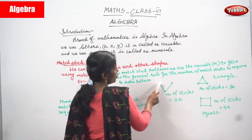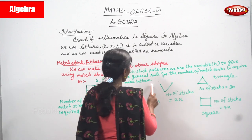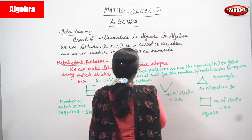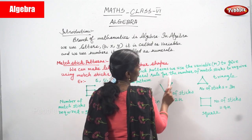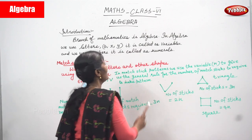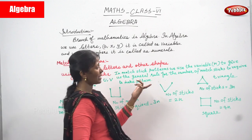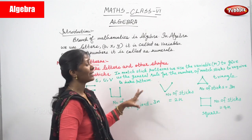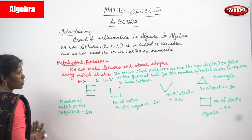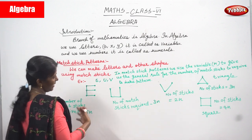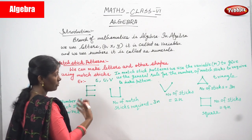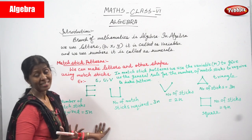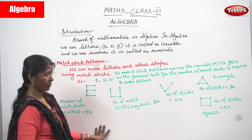In matchstick patterns, we use the variable N to give the general rule for the number of matchsticks required to make a pattern. N is equal to the number of matchsticks needed to give the general rule for how many matchsticks are required to make the pattern. N represents the number of matchsticks required.